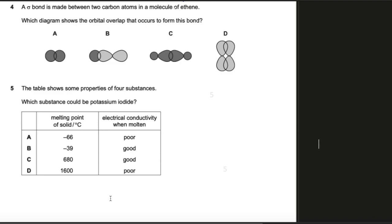A sigma bond is formed between the two carbon atoms in a molecule of ethene. Which diagram shows the orbital overlap that occurs to form this bond? In the structure of ethene a carbon-carbon double bond is present. The examiner is asking about the sigma bond. In a sigma bond there is head-to-head overlapping, so you can eliminate option D because option D shows sideways overlapping. You have to pick from options A, B, and C.